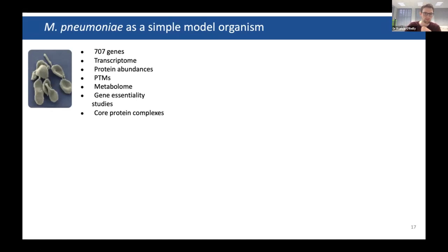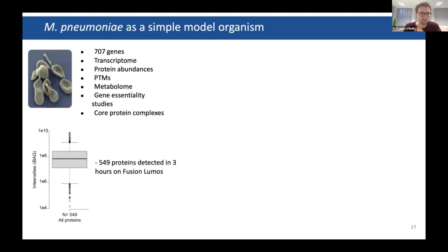It has only 707 genes because most of its biosynthetic capabilities have been removed through evolution. Many of its 'omes have been studied — transcriptome, metabolome, et cetera. To show how simple it is: if you do a simple mass spec run with a high-end mass spectrometer, you detect 549 proteins. It's very simple.